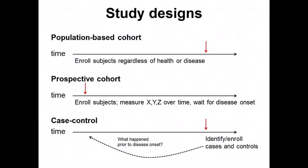Study designs for looking at complex traits can be cohort designs or case-control studies for a specific disease. A population-based cohort ascertains all members of a population without respect to health or disease status. A related type is a prospective cohort where individuals are ascertained early, and various traits are measured over time, waiting for disease onset to look at risk.